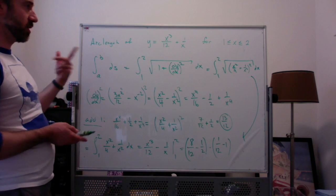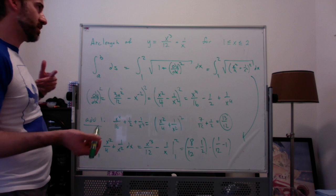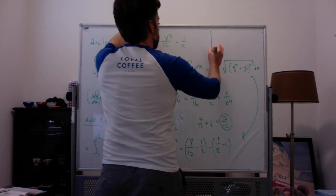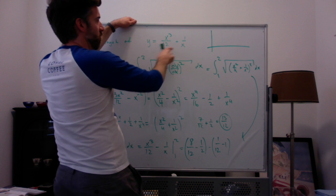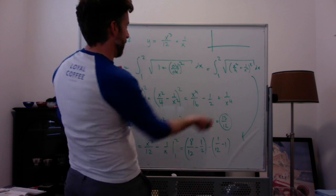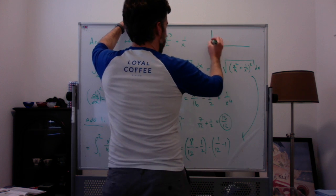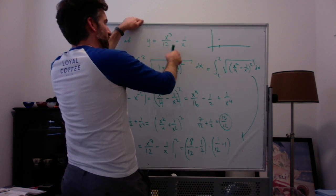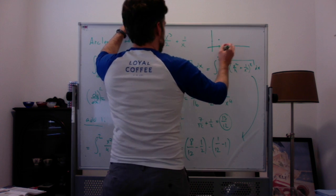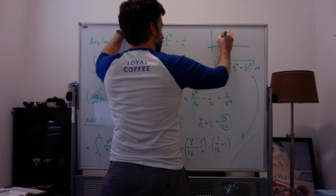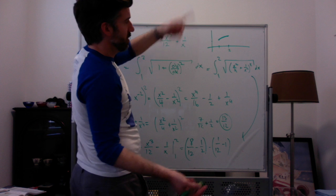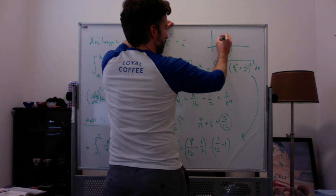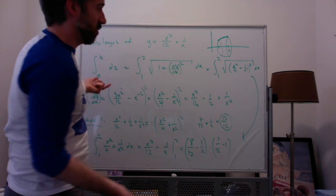Now we're going to look at the surface area of this curve rotated around either the x-axis or the y-axis. This looks like something — I could try to graph a bit of it. If x is 1, I get 1/12 plus 1, so about 13/12. When I plug in 2, I get 8/12 plus 6/12 which is 14/12, so it's not a lot bigger. It's probably looking something like this. We're going to rotate it around the x-axis and see what surface area we get, and then also around the y-axis.